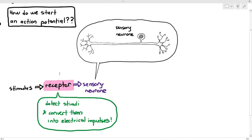For example, the receptors in our eyes detect light, the receptors in our nose detect smell, and the receptors in our ears detect sounds. The function of the receptor is to detect the stimulus and convert them into electrical impulses. Only when they convert it into the electrical impulse can the sensory neuron generate the electrical impulse in their axon, move it along their axon, and send it across the synapses to the next neurons until it reaches your brain, which tells you what's going on with the world.